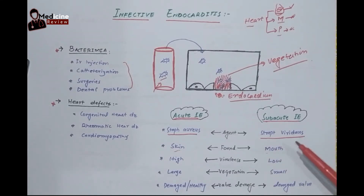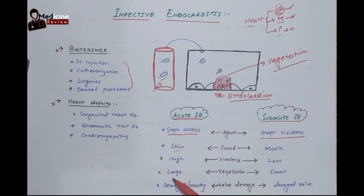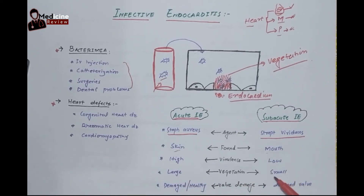Streptococcus viridans is not very virulent. Staph aureus makes very large vegetations, while Streptococcus viridans makes small vegetations. Streptococcus viridans infects only already damaged valves, but Staph aureus can infect both damaged and healthy valves, causing severe destruction.